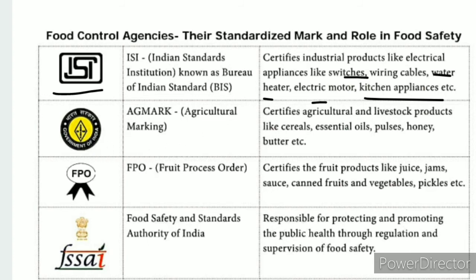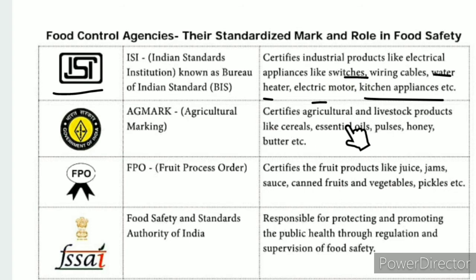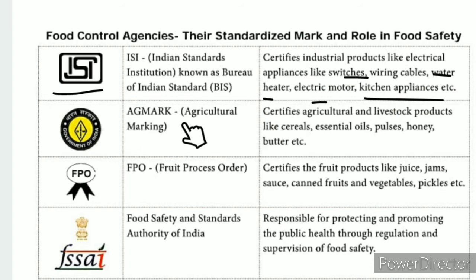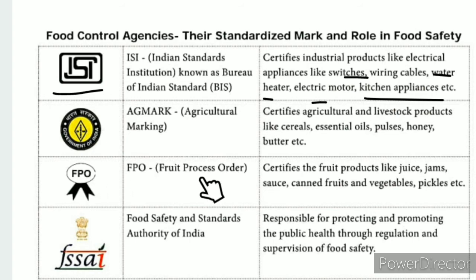The Agmark is an agricultural marking. Products that should carry an Agmark include agricultural and livestock products such as vegetables, essential oils, pulses, honey, and butter. Fruit products like juice and jam also fall under this category.